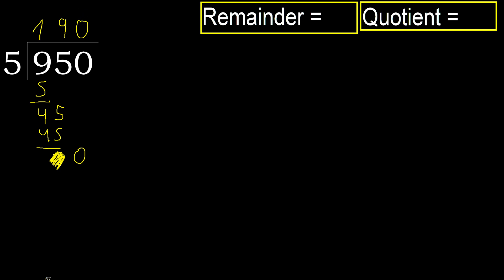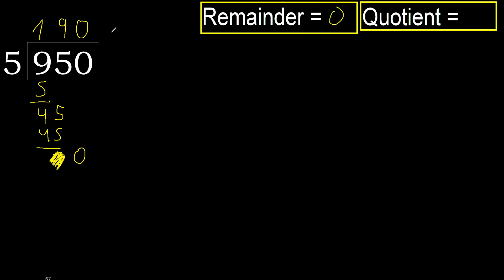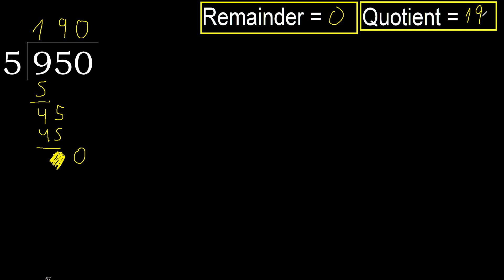Always complete with 0. Complete because here finished with this number. 950 divided by 5 is 190.